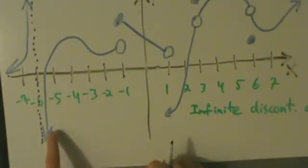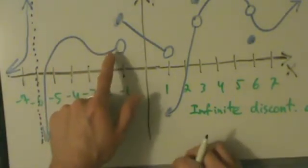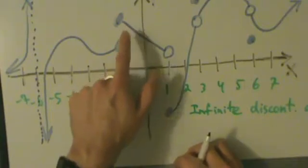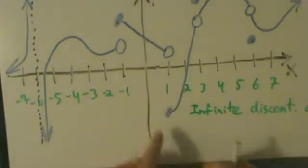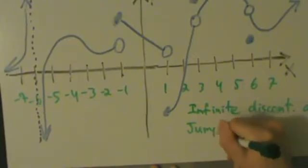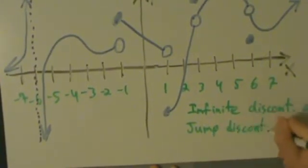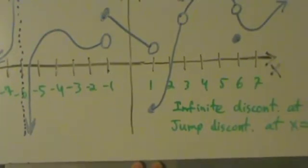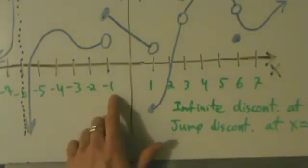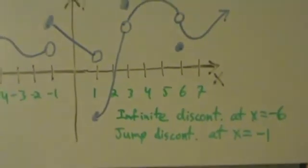Continuing on this piece, we move along here, everything's continuous, fine, fine, fine. Then here, we jump from this piece to this piece. So now we have a jump discontinuity. So we can write jump DISCONT at x equals, it happens at x equals negative 1. Alright, so that's our next one.